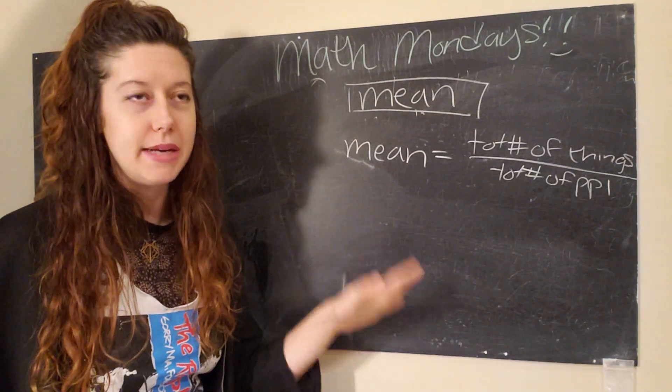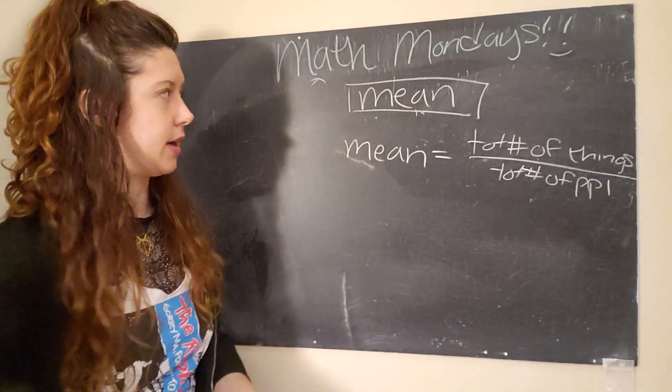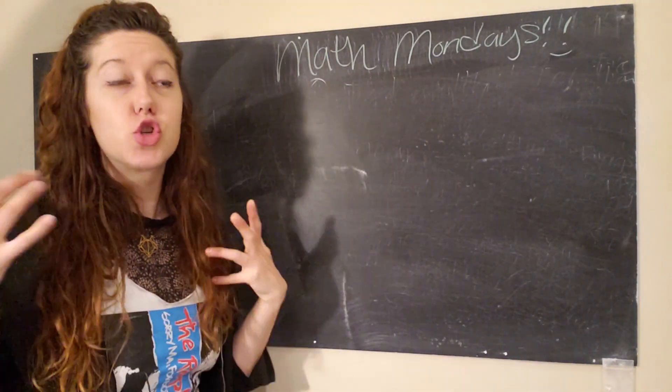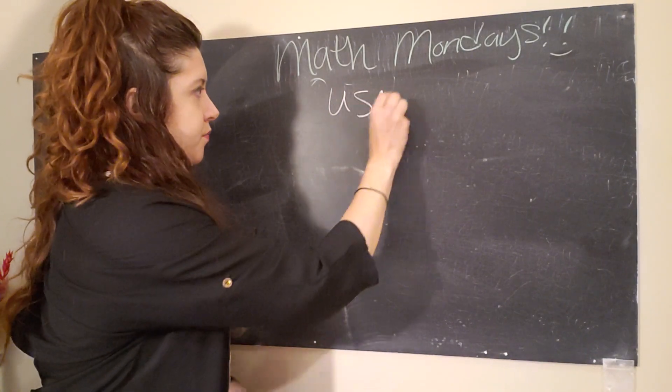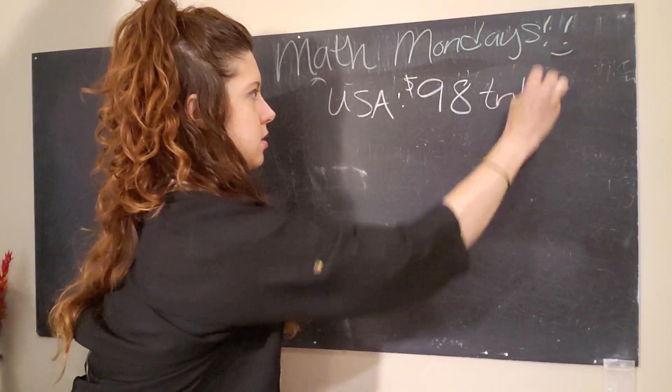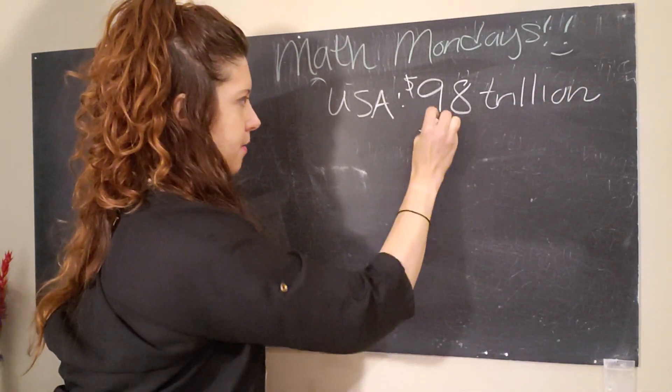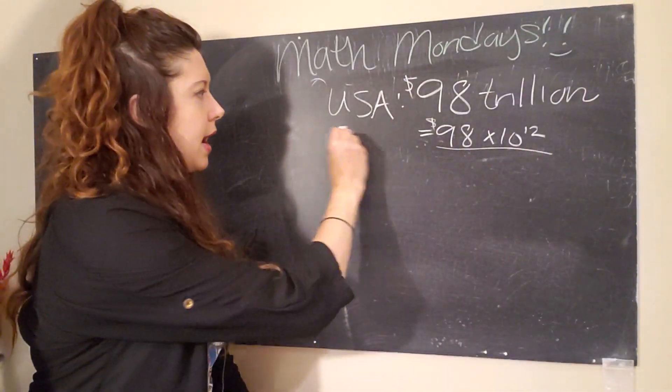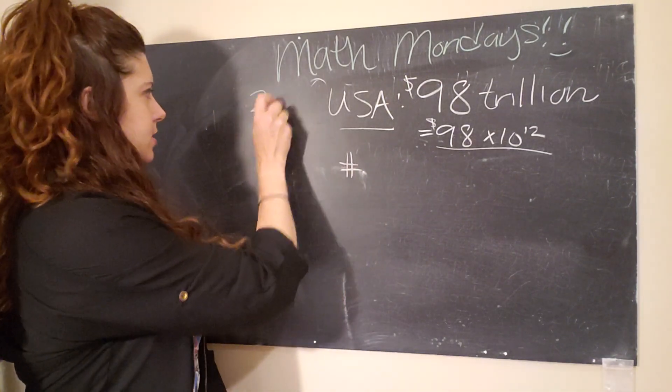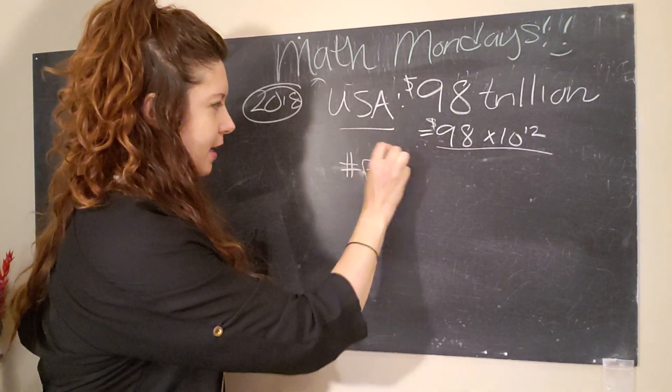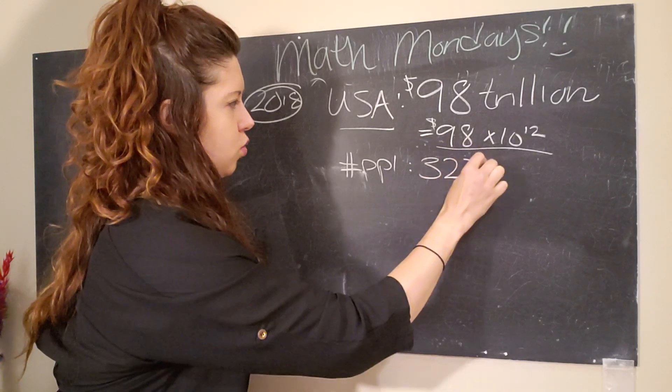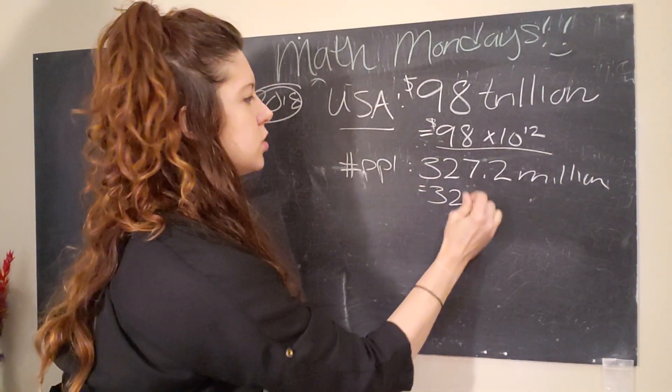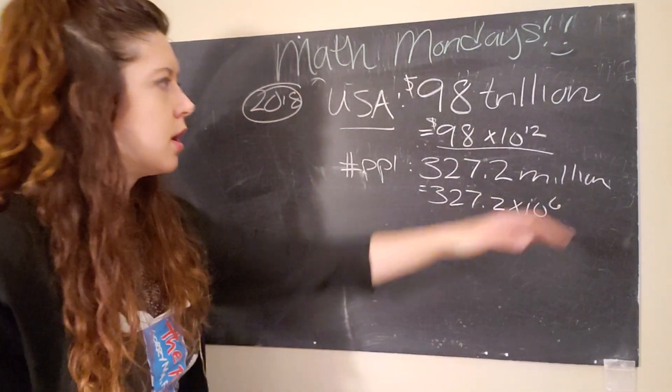So, to illustrate how mean can be a little misleading, I want to look at an actual data set, or some actual numbers. So, in the United States, the total wealth within the U.S. is 98 trillion dollars. And so, this is actually 98 times 10 to the 12th. And so, that's what that number actually is. And the total number of people in the United States, and by the way, this is 2018 data, the number of people, again, I'm going to abbreviate because I like to be lazy, the number of people is 327.2 million. And this is going to be equals 327.2 times 10 to the 6th.